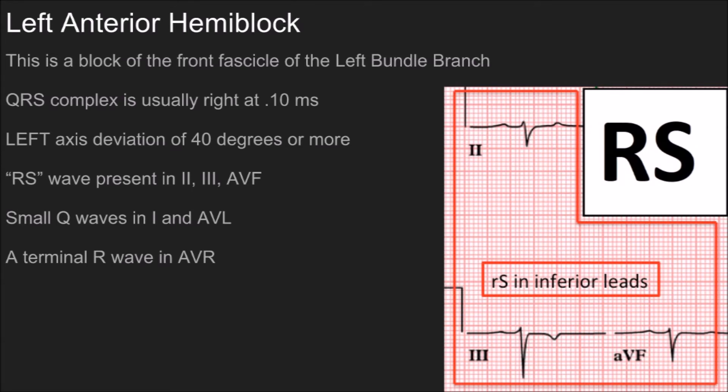So the criteria for the left anterior hemiblock. It's going to be a block of the front fascicle, so you're going to see EKG changes that associate with that area. What you're usually going to find is a normal QRS complex — it's going to be right at 100 milliseconds. Remember, when we deal with bundle branch blocks, we're usually used to dealing with wide complex rhythms greater than 0.12. That's not going to be the case here. You're going to find left axis deviation, so the axis is actually going to shift towards the left side in the case of the left anterior hemiblock.